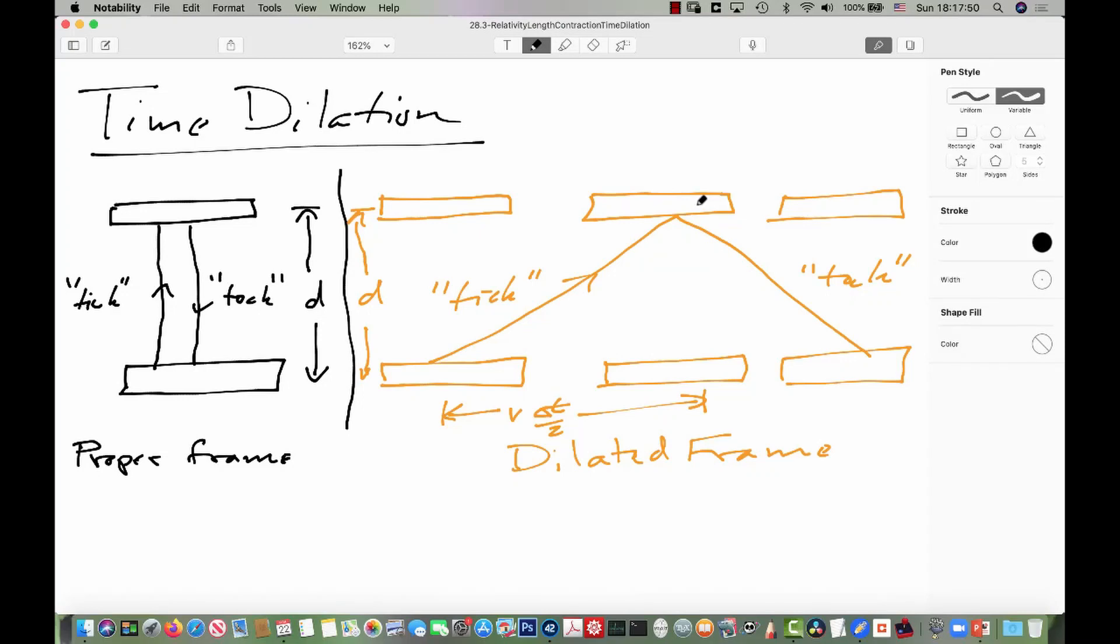In the last video, we saw that different observers are having a different experience of time. Events that are simultaneous for one observer are not simultaneous for another. So we need to see what this does for how people measure the time between events.